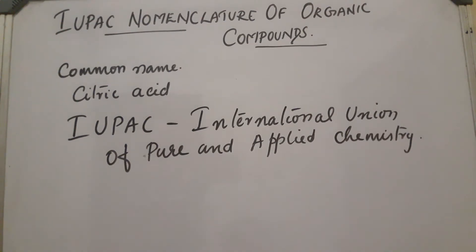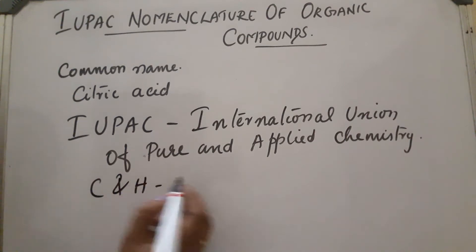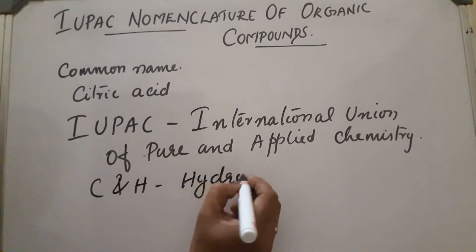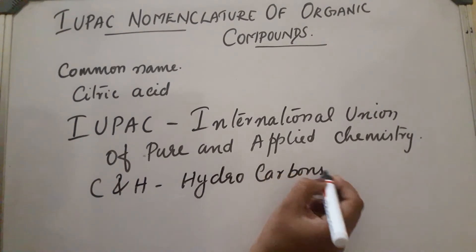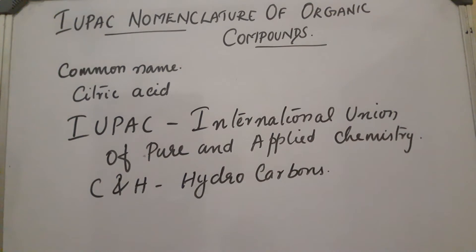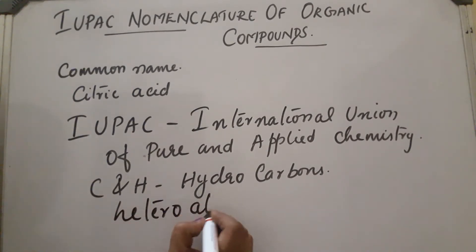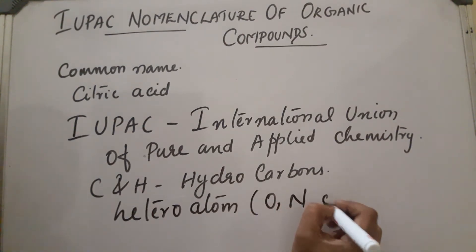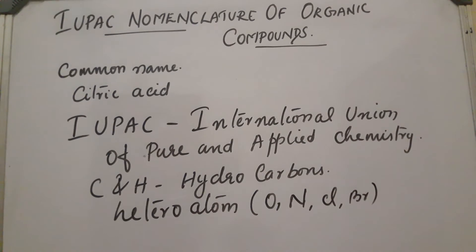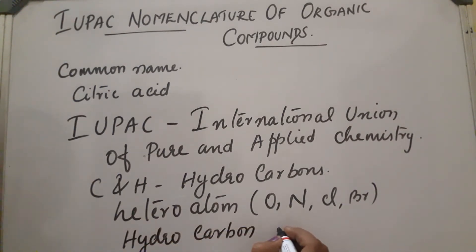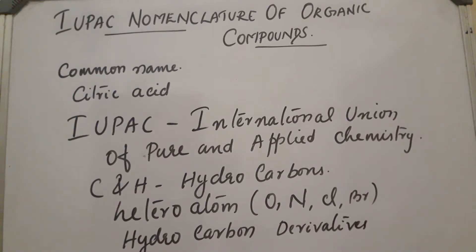The simplest organic compounds contain only carbon and hydrogen. Such compounds are called hydrocarbons. When these hydrocarbons are combined with heteroatoms — heteroatom means atoms other than carbon and hydrogen, like oxygen, nitrogen, chlorine, bromine, etc. — they are called hydrocarbon derivatives.